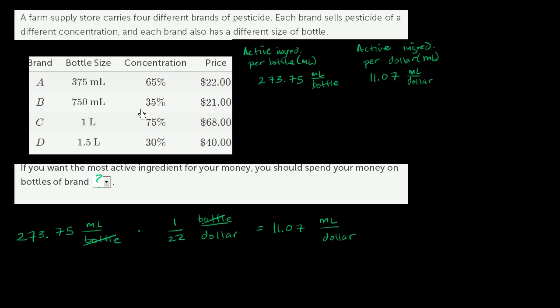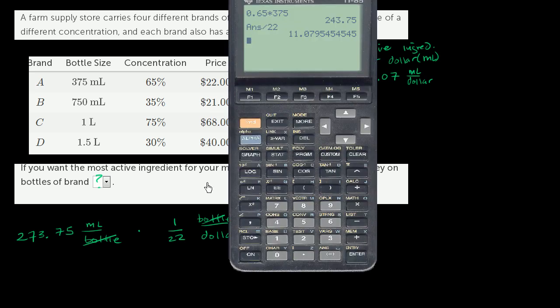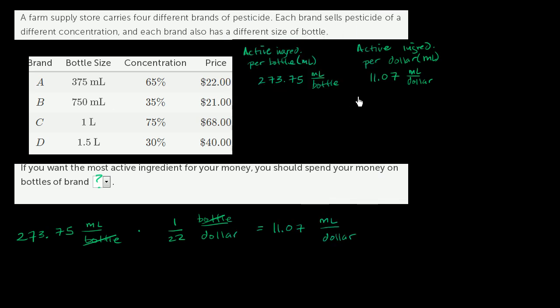So for this one right over here, in general, to figure this out, we just have to multiply the concentration times the bottle size and then divide it by the price. So let's just do that for the next three. So the concentration is 35%, 0.35 times 750. So this expression is going to give us the milliliters of active ingredient. And then we can divide by the cost per bottle. And we're going to get 12.5 milliliters per dollar. So this one is 12.5 milliliters per dollar.